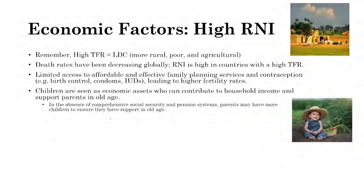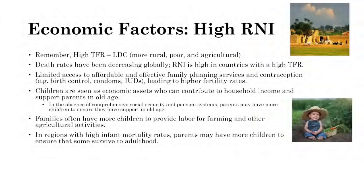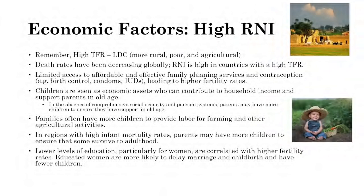In the absence of social security or pension systems, particularly where people work for themselves, parents may have more children to ensure support in old age. Families often have more children to provide labor for farming or agricultural activities — providing food or income. Lower levels of education, particularly for women, are correlated with higher fertility rates. In less developed countries, education may not be available, affordable, or prioritized, and is typically offered to men before women.